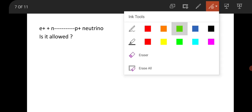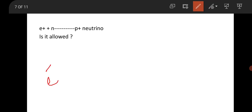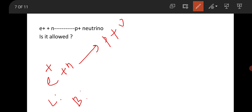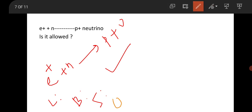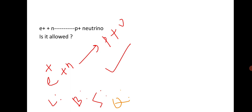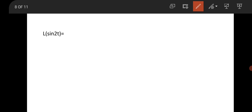This is a question from nuclear physics: is the reaction positron + neutron → proton + neutrino allowed or not? To check, you verify conservation of lepton number, baryon number, spin, charge, and isospin. By checking each conservation law in this manner you can determine whether the reaction is allowed or not.